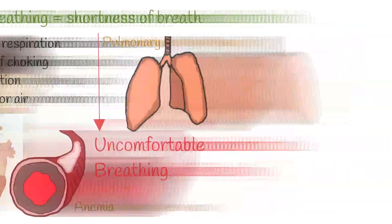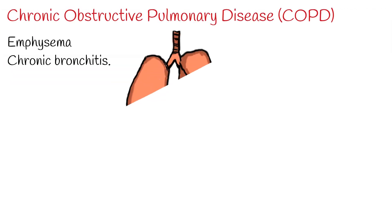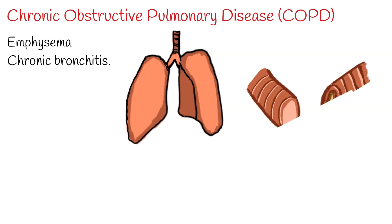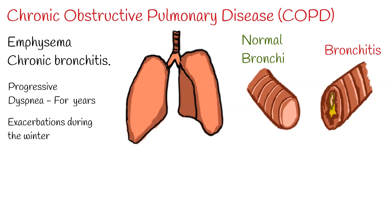The most common causes of dyspnea include, first, chronic obstructive pulmonary disease (COPD), which comprises emphysema and chronic bronchitis. Such patients generally have a long history of cigarette smoking and gradually progressive dyspnea over a number of years. Most patients have stable symptoms, but may have exacerbations during the winter months. A productive cough is a frequent associated symptom, and the sputum may become purulent during exacerbations.